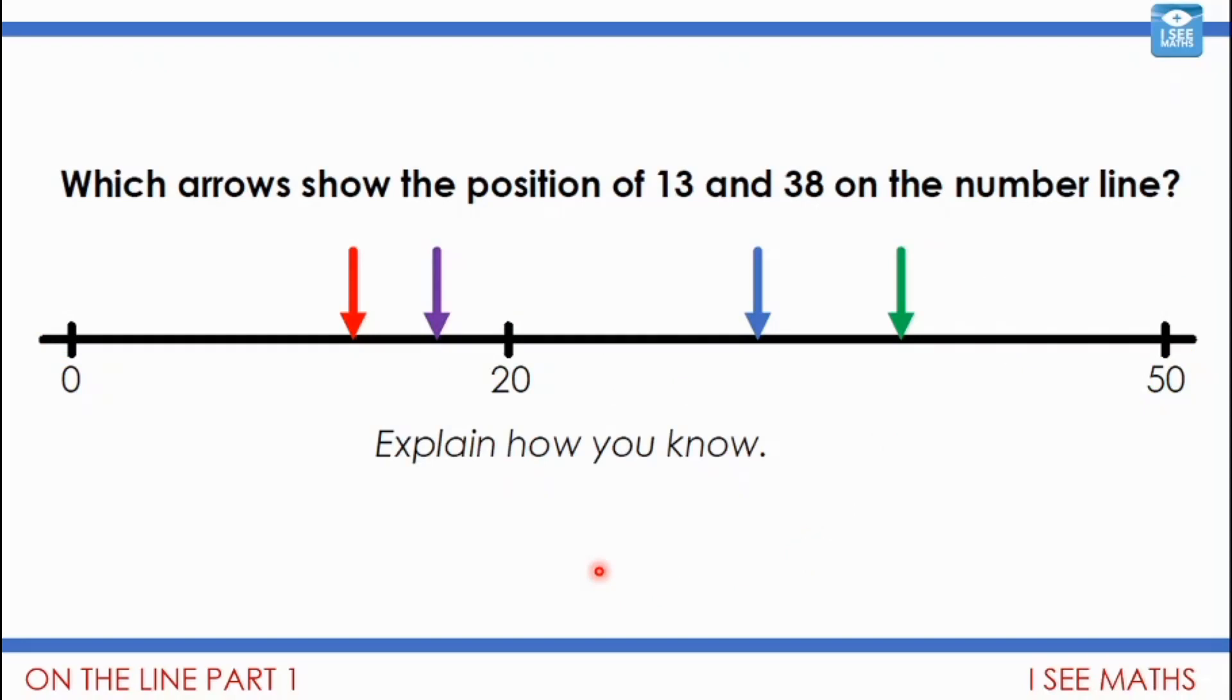Now, have a look at this example here. Which arrows show the position of 13 and 38? So one arrow shows where 13 is. And the other shows where 38 is. And two arrows are like the odd ones out. So which ones? Explain how you know. Pause the video. Okay, well, first of all, 13, I know it's less than 20. But which one? I've got to think. So 13 is 7 less than 20.